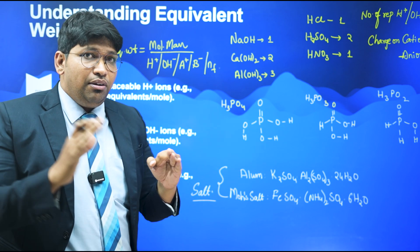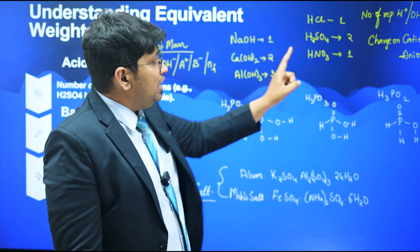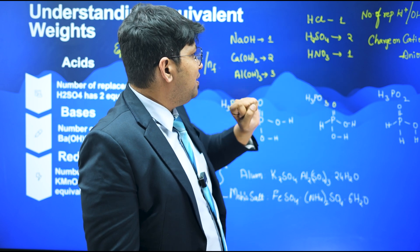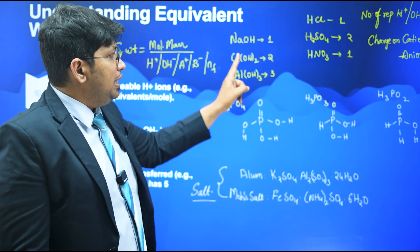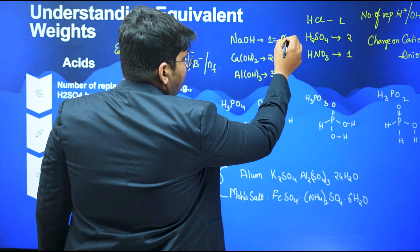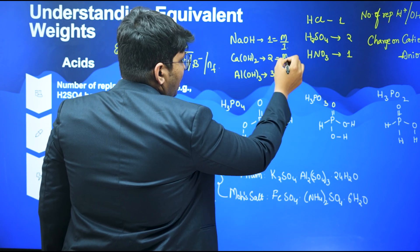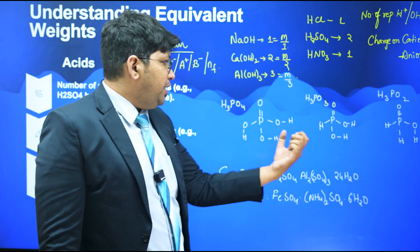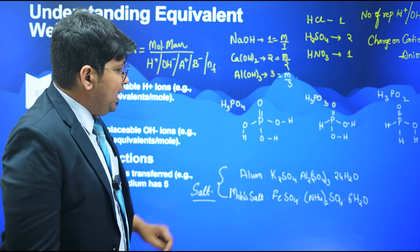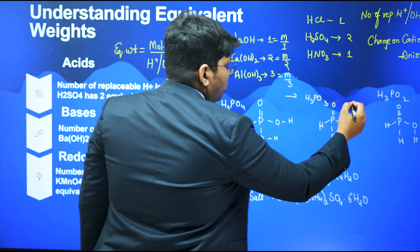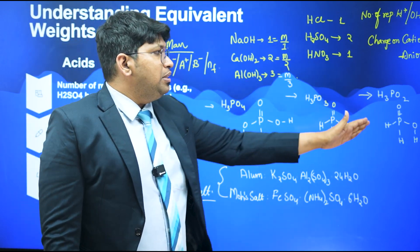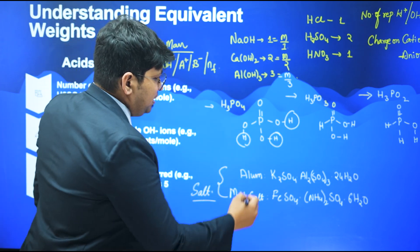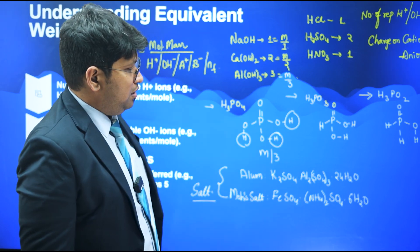For acids, the number of replaceable H+ ions is very important. For H3PO4, H3PO3, and H3PO2, we need to identify the acidic protons. H3PO4 has 3 replaceable H+, so equivalent weight = M/3. However, H3PO3 has only 2 replaceable hydrogens, so it is M/2 — not M/3 even though it has 3 hydrogens. H3PO2 has only 1 replaceable H+, so it is M/1.